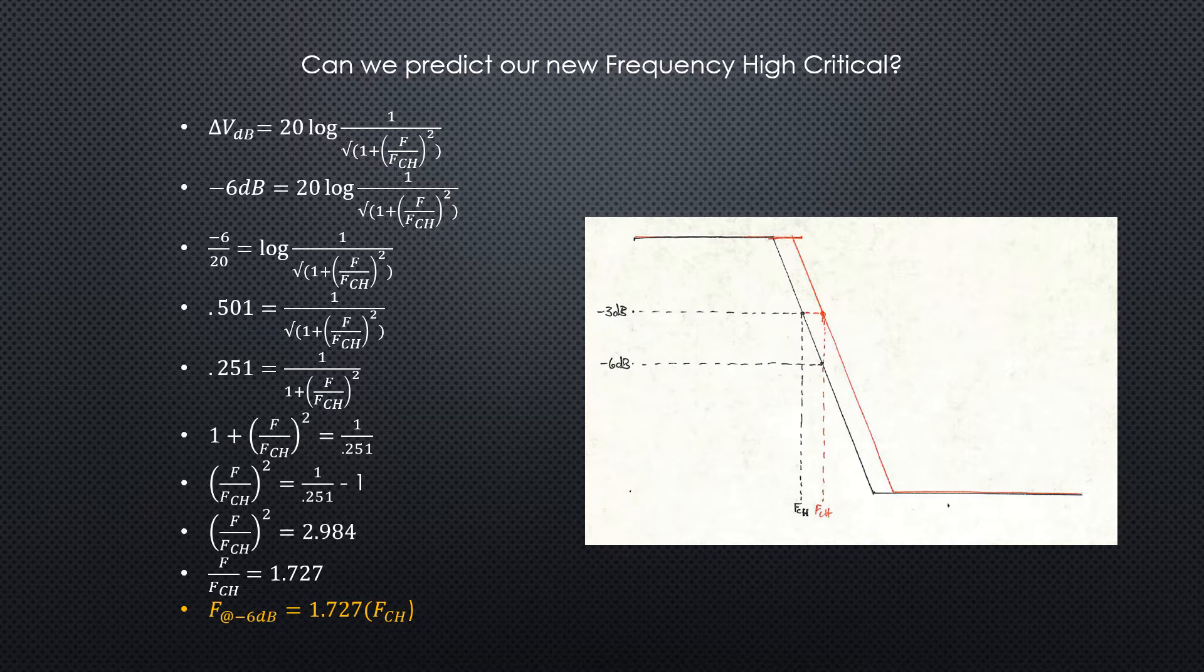So if I want to find the frequency at 6 dB down, I can put this formula in terms of minus 6 dB and start working the formula. I've got all the math here showing in terms of frequency and cutoff. Finally at the bottom, if you want to step all the way through this, we get that frequency at minus 6 dB is equal to 1.727 times the original cutoff frequency.